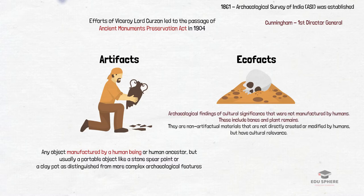Ecofacts are the organic and environmental remains which can reveal many aspects of human activity in the past. They include animal bones, plant remains, soils and sediments, etc. These Ecofacts help us understand the environmental conditions in which people lived, the variations in climate and their effects on humans, and what kind of food they ate.